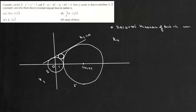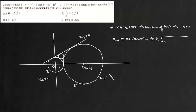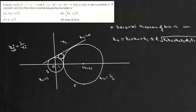So k1 is 1, k2 is 1 over r which is 1 over 3, and k3 is 0. By Descartes' theorem, k4 equals k1 plus k2 plus k3 plus or minus 2 times the square root of k1·k2 plus k2·k3 plus k3·k1. Curvature is positive if circles touch externally and negative if they touch internally. For the straight line, radius is infinite so curvature is zero.